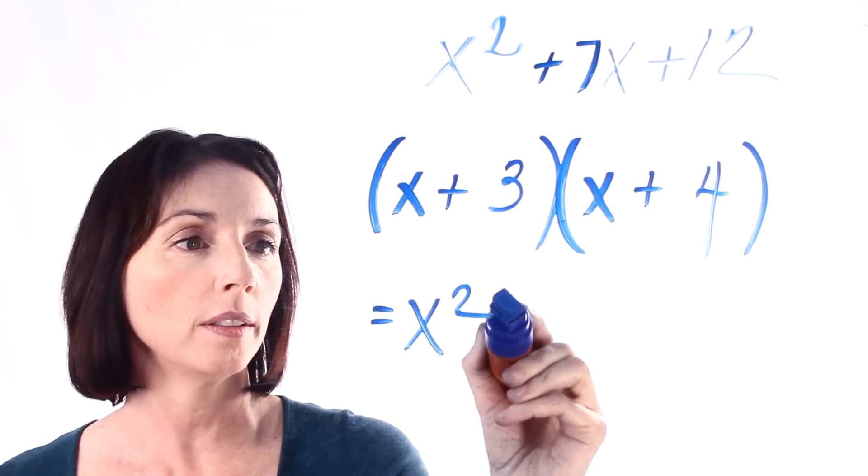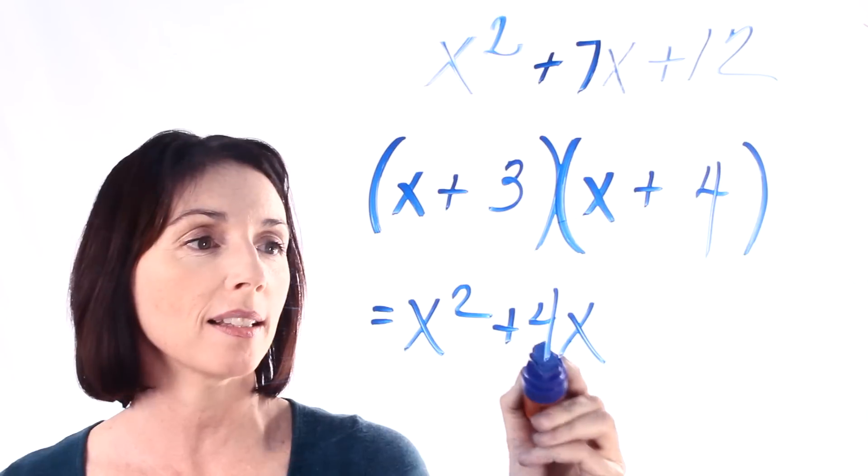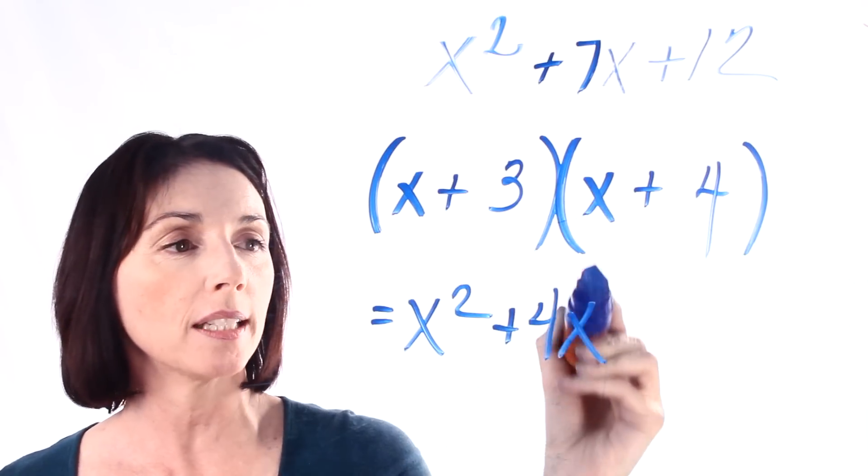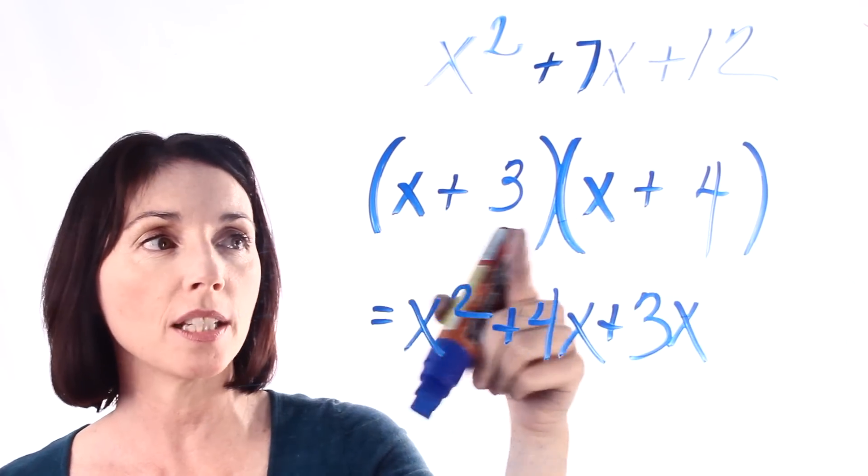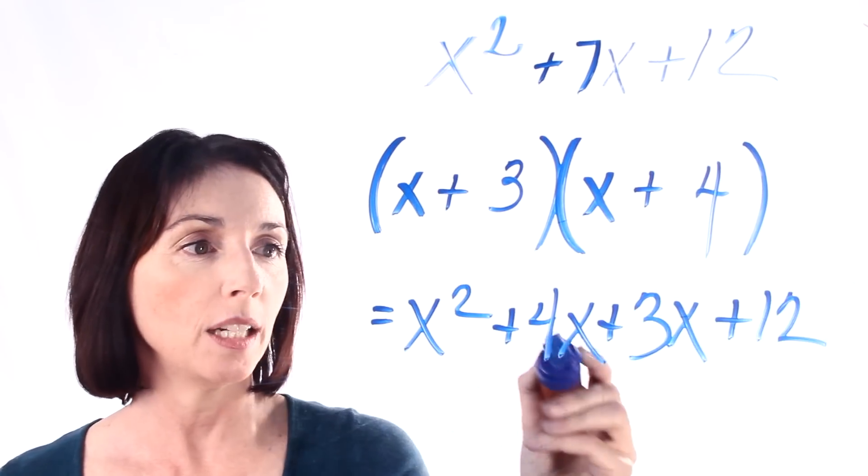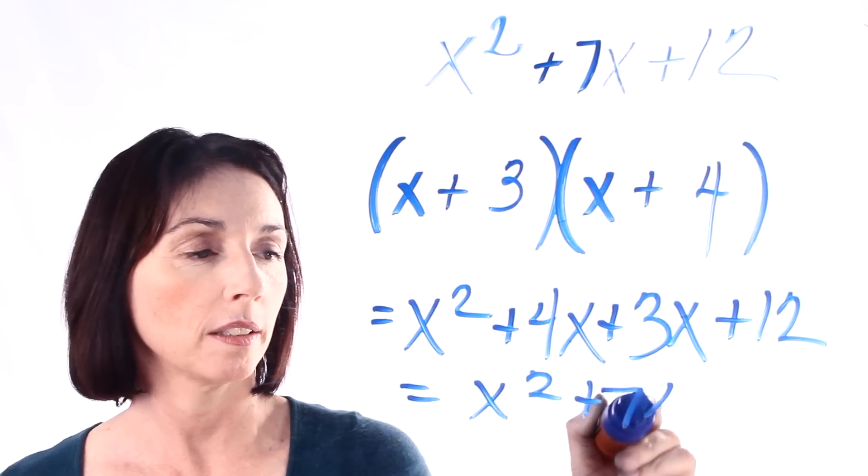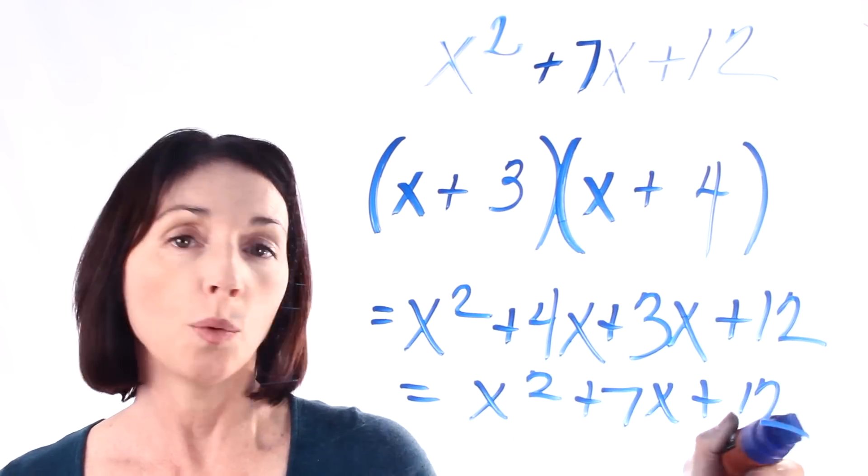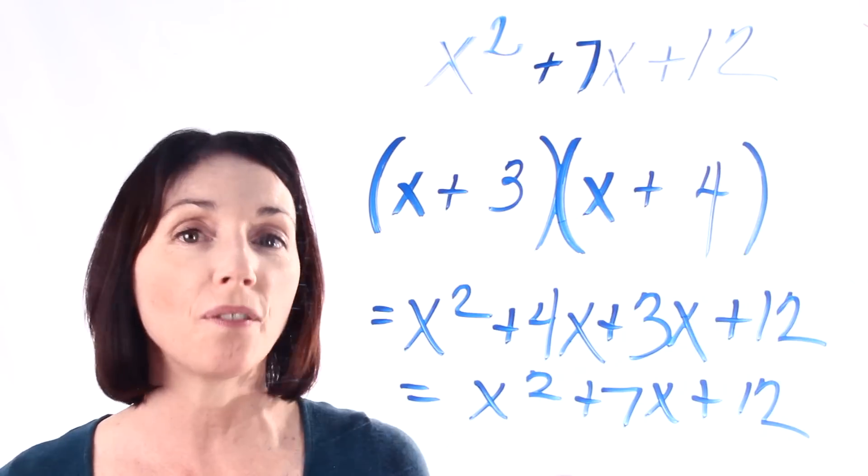Then I get x times 4 which is 4x and it's a plus 4x because we have positive signs. And then I get a plus 3 times an x which is a plus 3x. And then we get a plus 3 times a plus 4 which is plus 12. And if we combine these two terms in the middle we end up with exactly the expression we started with. So we know that we factored it correctly.